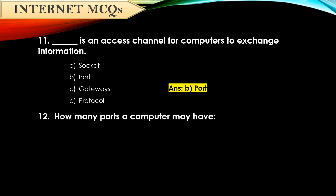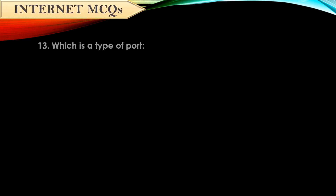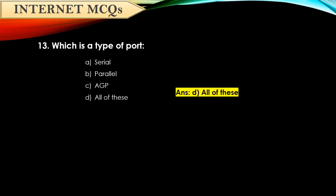Question number twelve: How many ports may a computer have? It's 65,535. Question number thirteen: Which is a type of port? Answer is all of these — Serial, Parallel, and AGP are all types of ports.